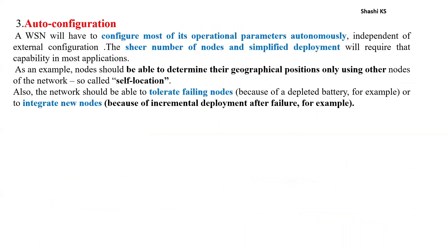The next mechanism is auto-configuration. A wireless sensor network should be able to configure its operational parameters autonomously, independent of external configuration, because of the large and complex number of nodes and simplified deployment. For example, nodes should be able to determine their geographical positions based on the positions of other nodes — called self-location — tolerate failing nodes, and integrate new nodes in incremental deployments.